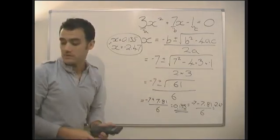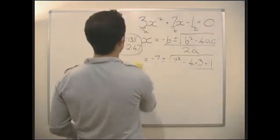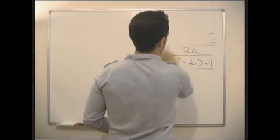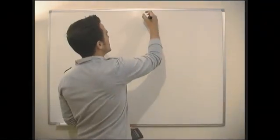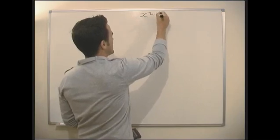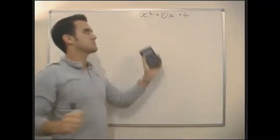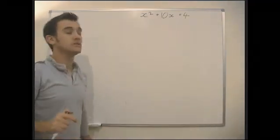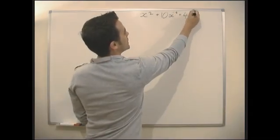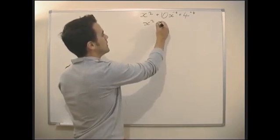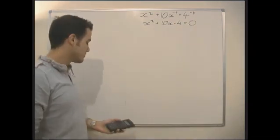It's just a case of putting it into the equation. Let's have another go. This time we're going to have x squared plus 10x equals 4. Now, it's not how we normally have it — we need it to equal 0. So we minus 4 from each side, which gives us x squared plus 10x minus 4 equals 0. Now let's plug those numbers into the equation.